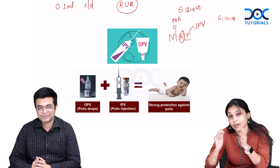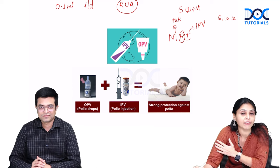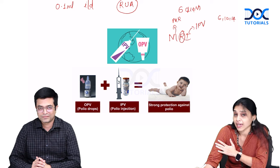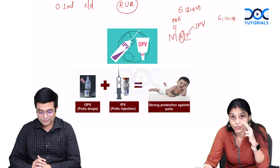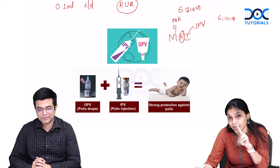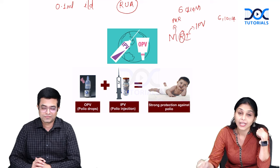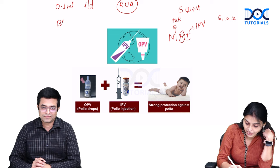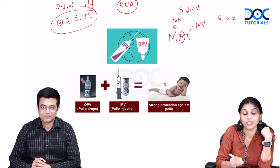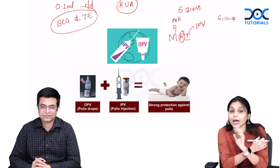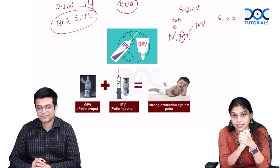You can correlate MRI to vaccines given on the right upper arm. The vaccines given on the left upper arm under the National Immunization Schedule are BCG and JE vaccine. These are important points to keep in mind.